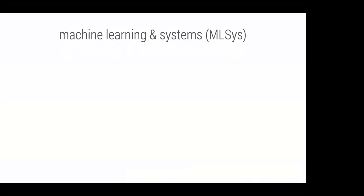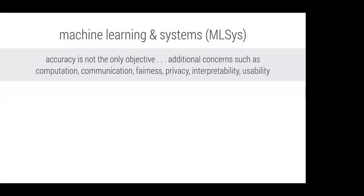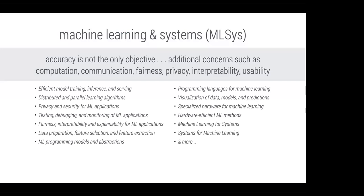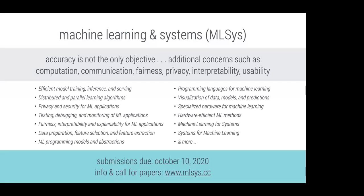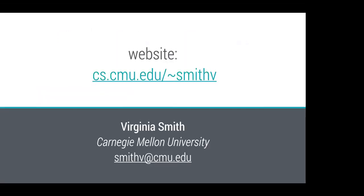One last thing: I am on the program committee for MLSys — a conference targeting research at the intersection of machine learning and systems. This corresponds to a lot of the work discussed today: in machine learning, accuracy is not and should not be the only objective. There are important concerns related to computation, communication, fairness, privacy, and interpretability. If you're working in this area, I would highly encourage you to consider submitting to MLSys — submissions are due in a couple of weeks on October 10th. Thanks, and I'm happy to take any final questions.